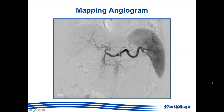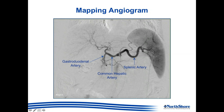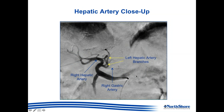Prior to the commencement of the Y-90 radioembolization, the patient underwent a mapping angiogram. As you can see here, this is an image of the celiac trunk and its branches. On the left you can see the splenic artery, and this is the common hepatic artery, which then divides into the gastroduodenal artery and the hepatic artery proper.